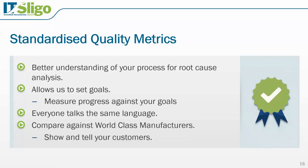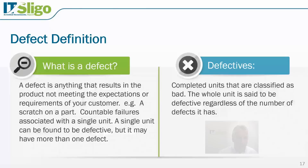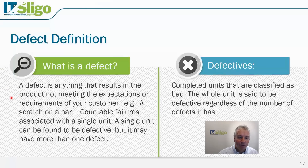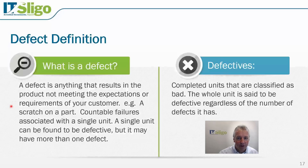Now let's look at the difference between a defect and a defective. Some of the terminology of Six Sigma is important here. A defect is anything that results in the product not meeting the expectations or requirements of your customer. For example, take a mobile phone — if you have a scratch on the mobile phone, that's a defect. Now depending on where the scratch is, if it's on the back of the phone it maybe doesn't really matter, but if it's on the cover or on the screen then it does matter.